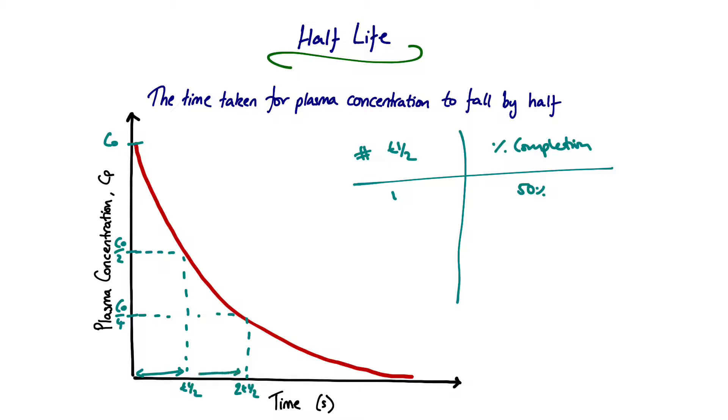If we carry on doing this, each time halving, we can say that after two half-lives we're 75% complete. After three half-lives, 87.5% complete. After four, 93.75% complete. And after five, 96.875% complete. Typically, we quote five half-lives as being equivalent to full completion of a reaction.